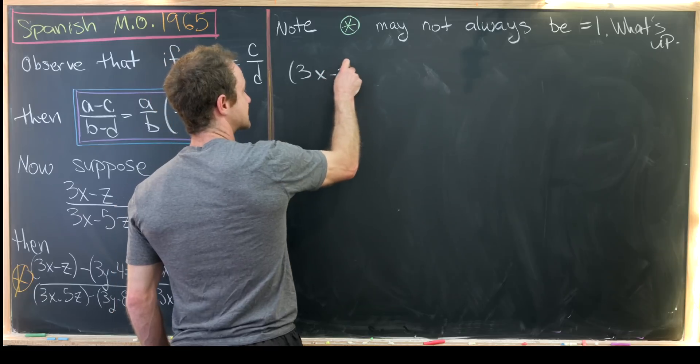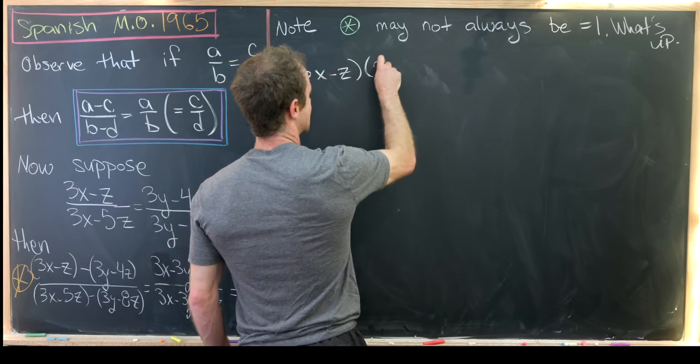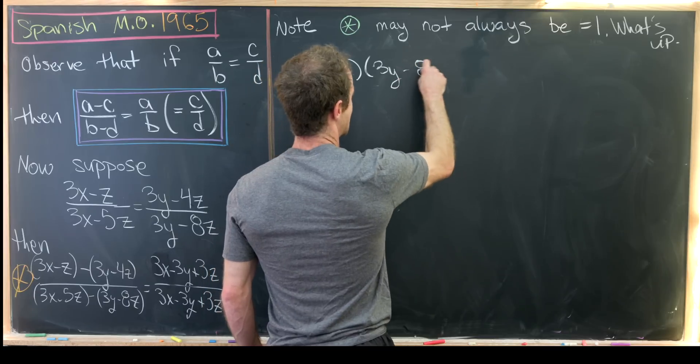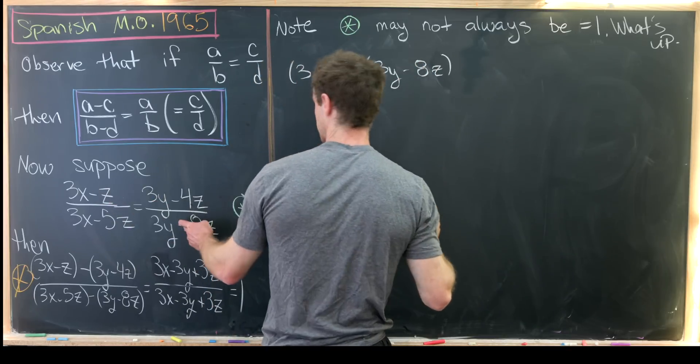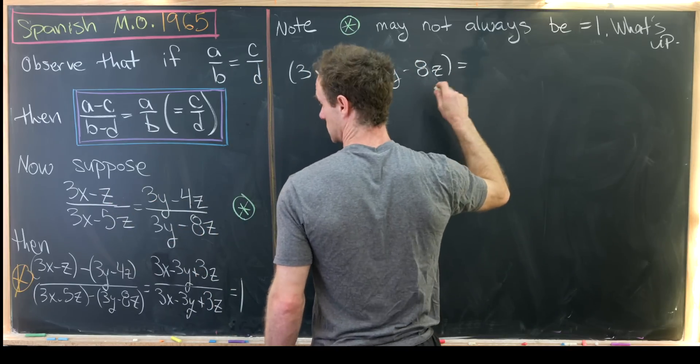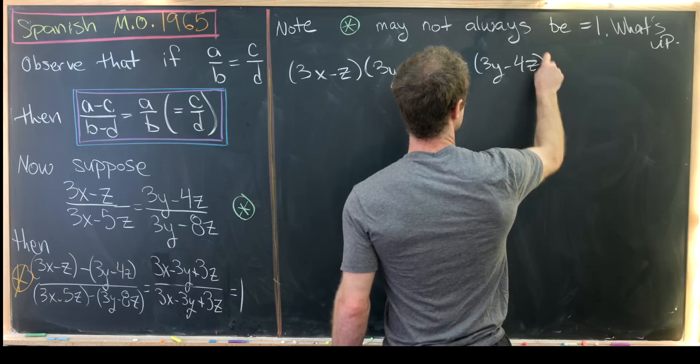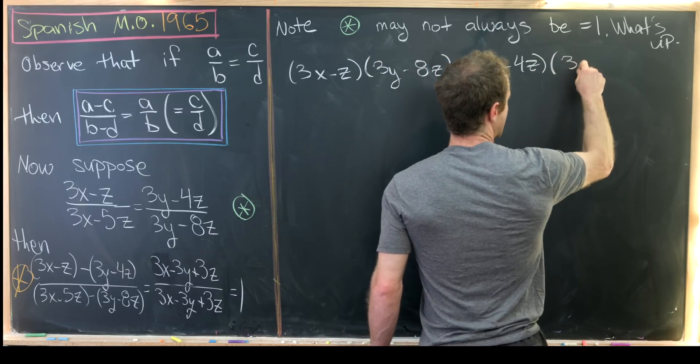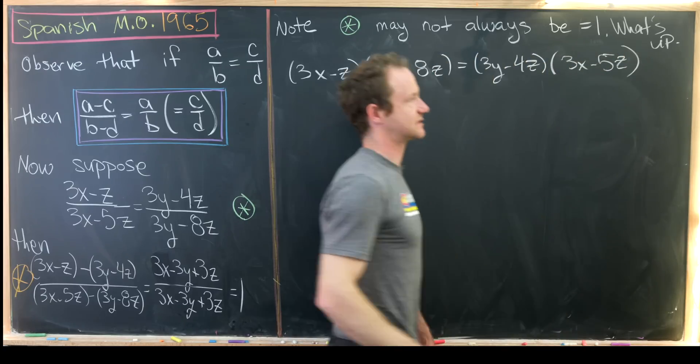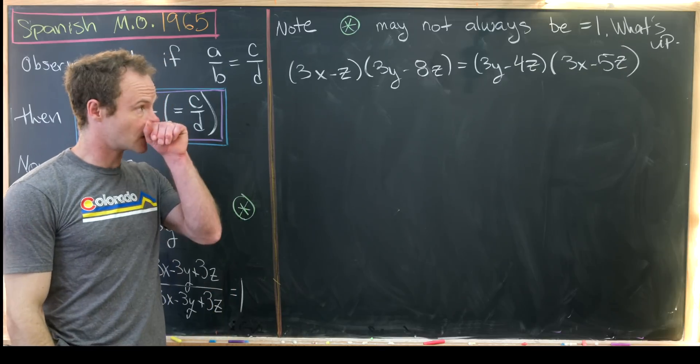So if those two fractions are together, then that gives us the following product equation. We have 3x minus z times 3y minus 8z, so that's from this product, equals 3y minus 4z times 3x minus 5z.